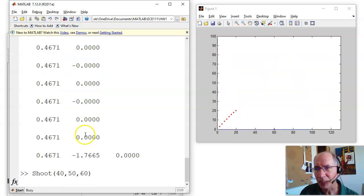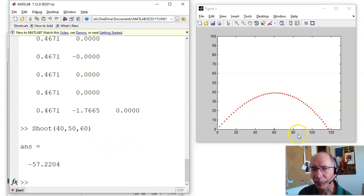I'm going to launch a tennis ball at 40 meters per second, angle of 50 degrees, target's at 60. If I do that, I miss the target. My target was 57 meters short of where I was.